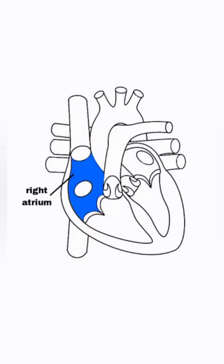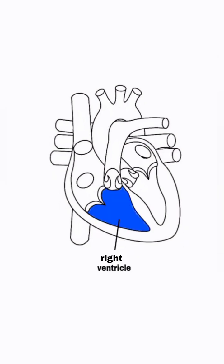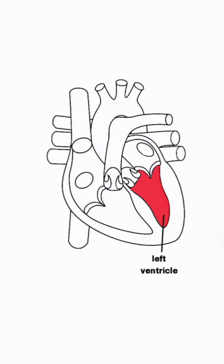Here's the right atrium, the upper right chamber, and the left atrium, the upper left chamber. Below them are the right ventricle and the left ventricle.